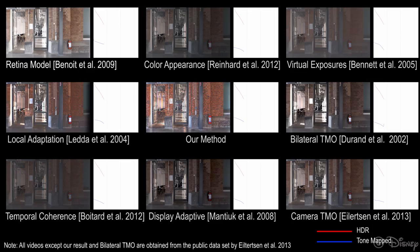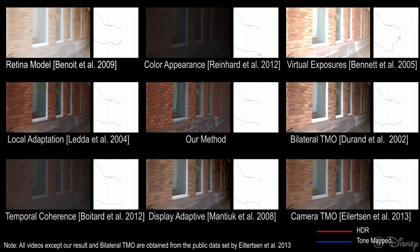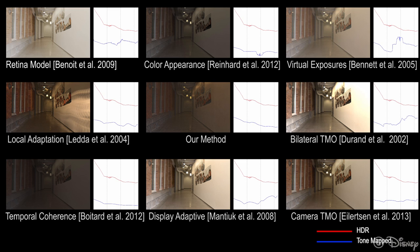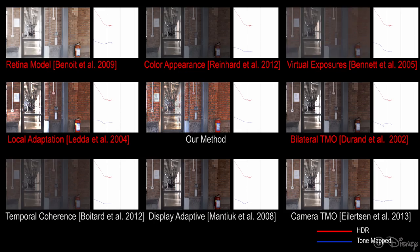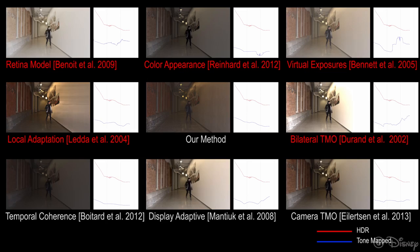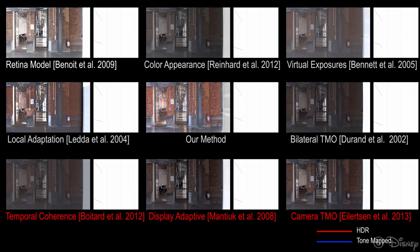Here we present a visual comparison of our method with other tone mapping operators. For each method, we show the tone mapped video over time, shown with blue lines, along with the compressed log mean plot of the HDR video for reference, shown with red lines. We can observe that the local methods tend to be inconsistent over time or generate strongly visible artifacts. The global operators, on the other hand, achieve better temporal stability, but they lack the capability of enhancing local contrast.